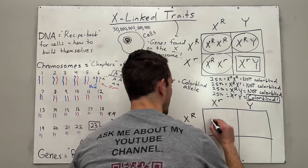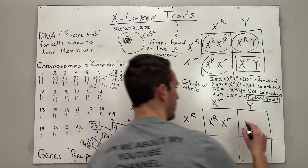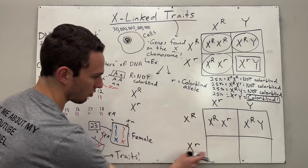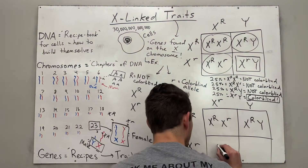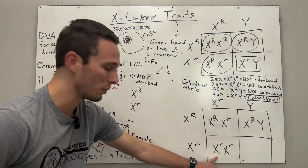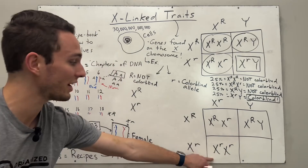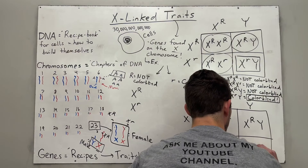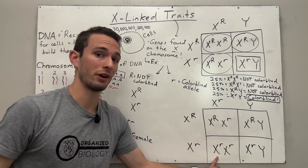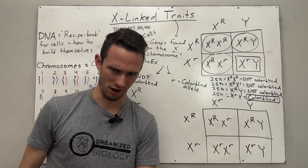In this cross we get a heterozygous female who will not be colorblind, and a male who is not colorblind. But interestingly, we also get a female who is homozygous recessive — two recessive colorblind alleles on her X chromosomes — so she will actually be colorblind. This is incredibly uncommon but not impossible. And we also get a colorblind male. Although rare, it is possible for a female to get two recessive colorblindness alleles and actually be colorblind. This is X-linked traits.